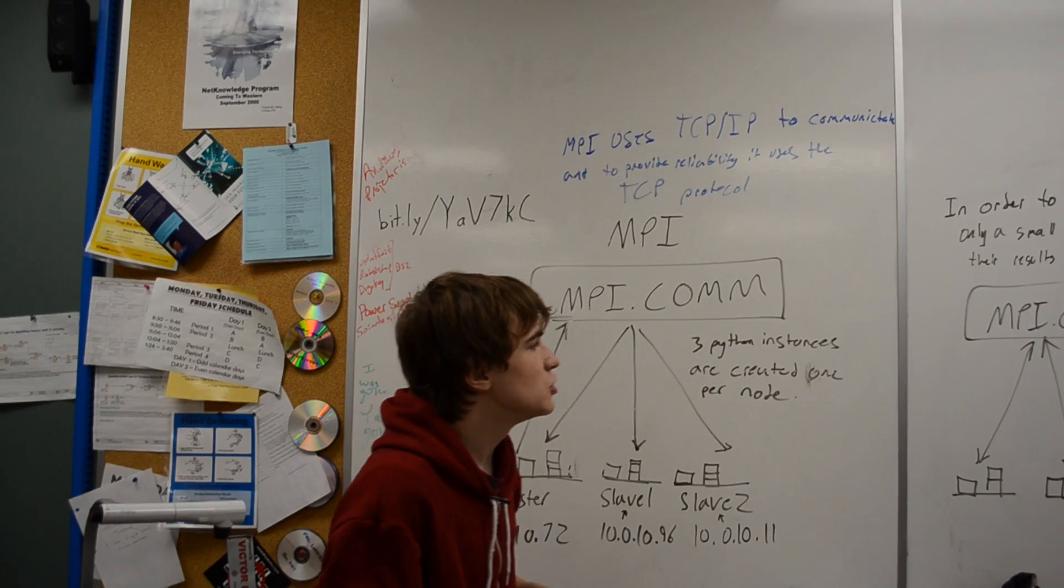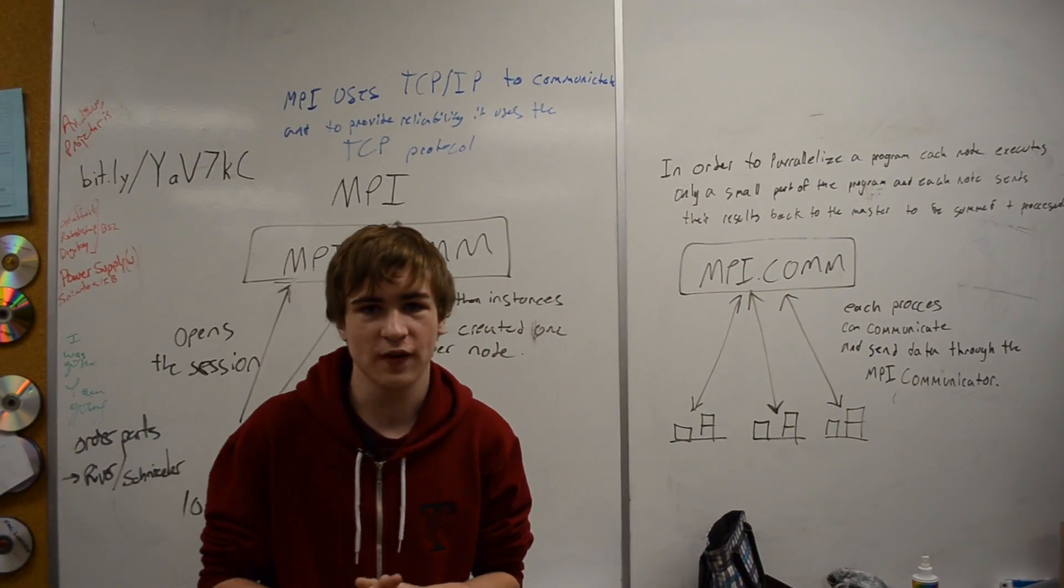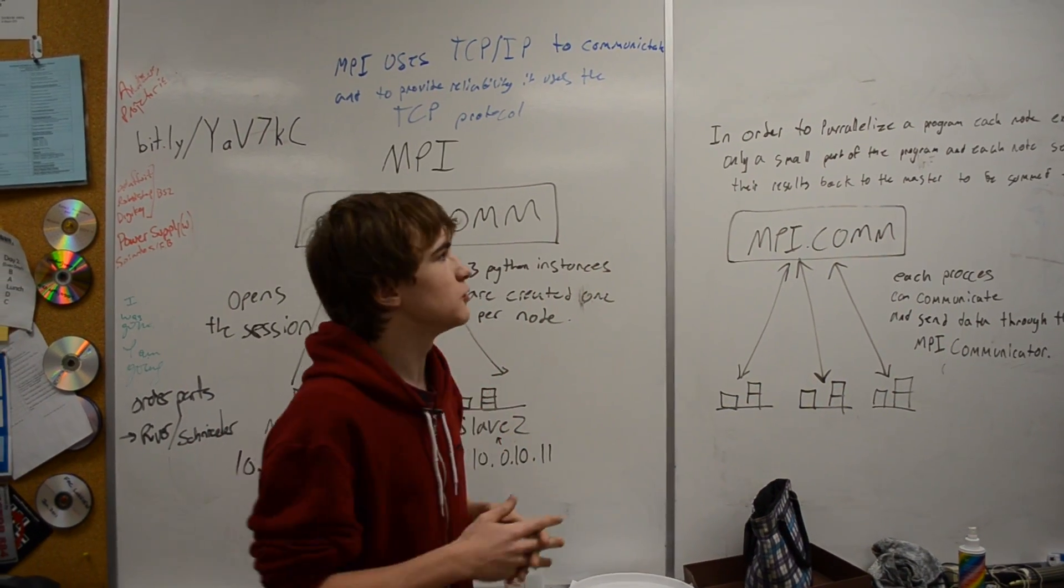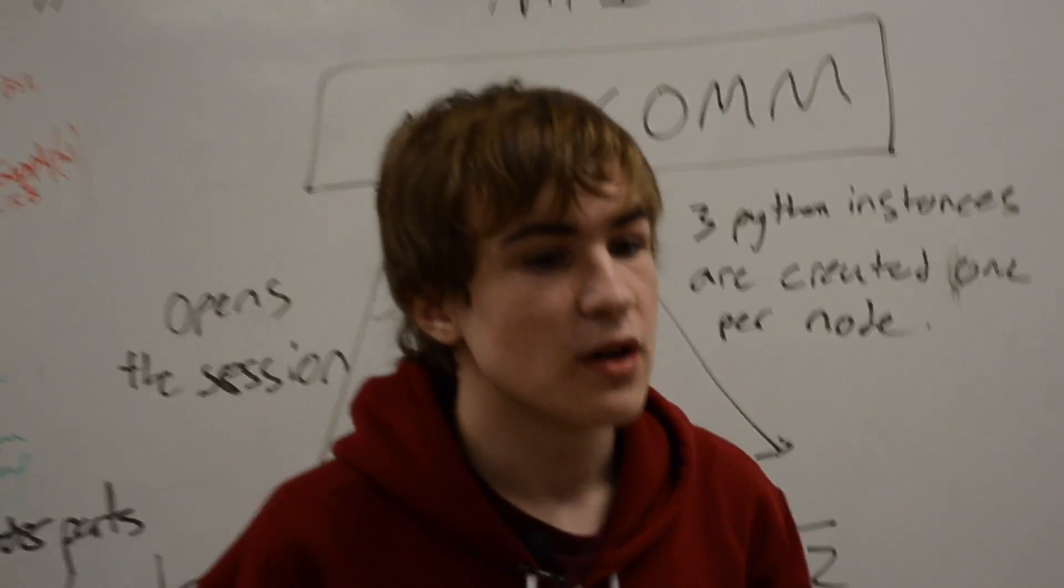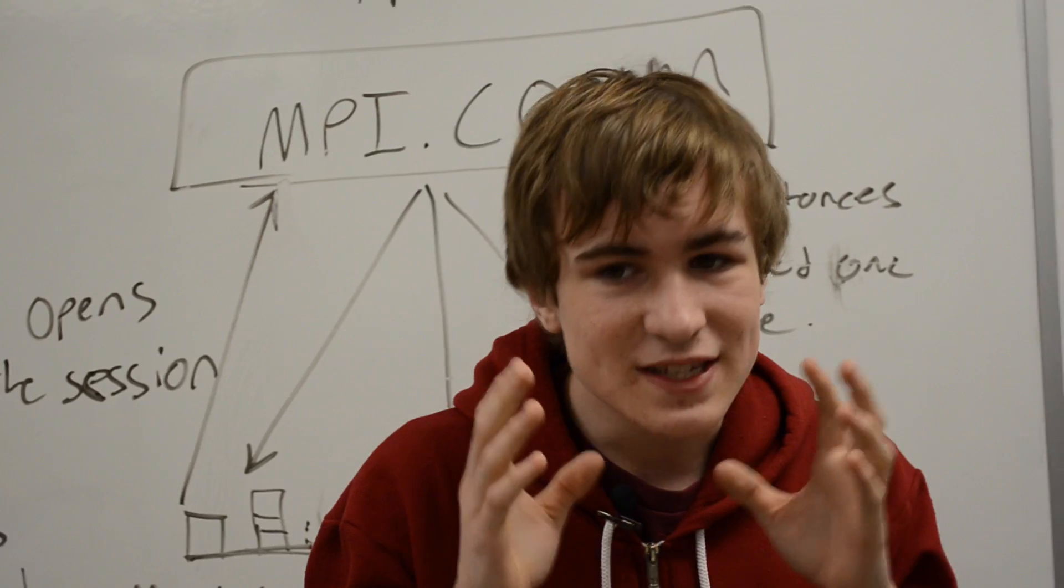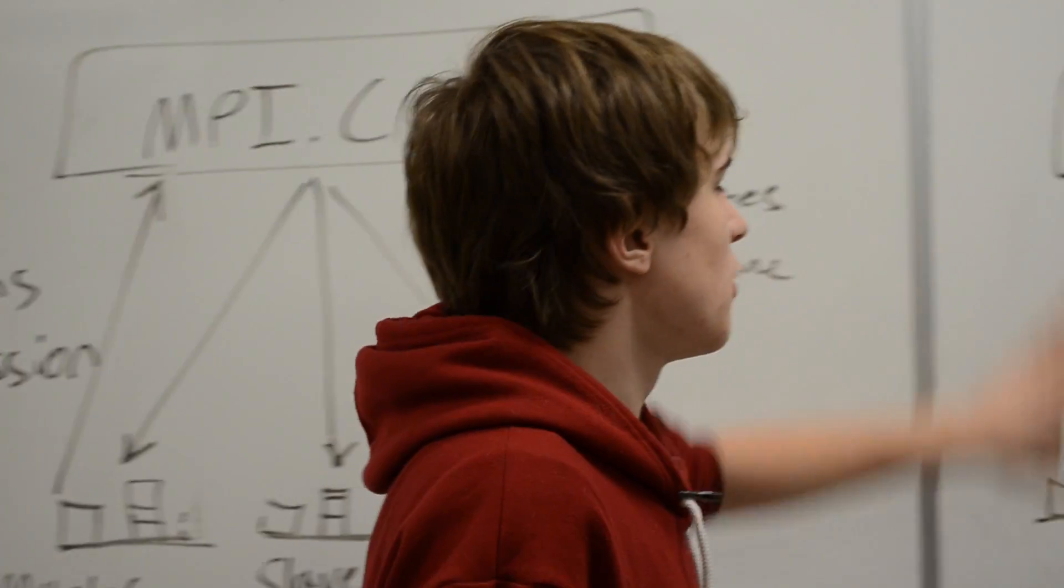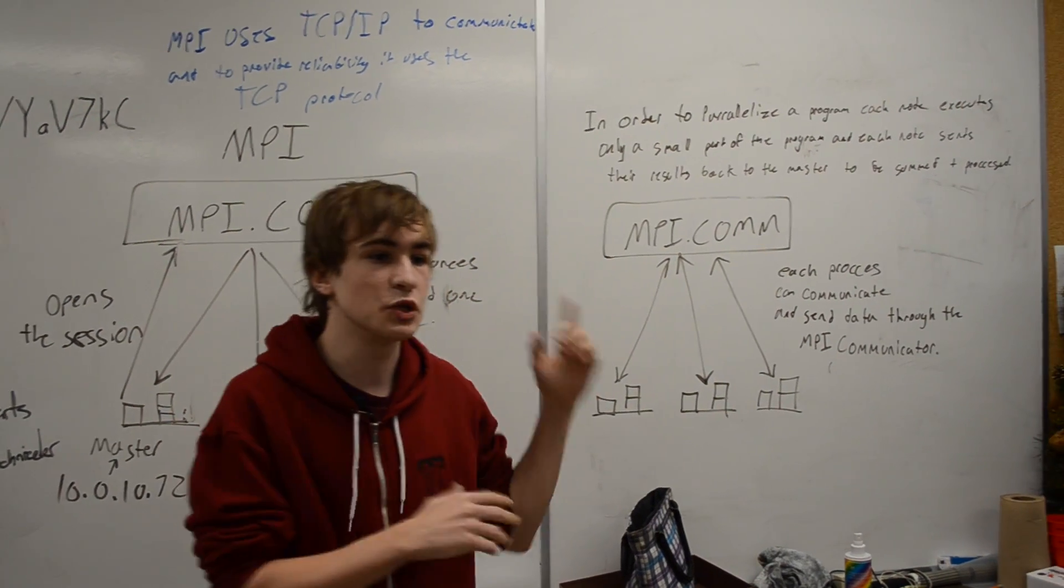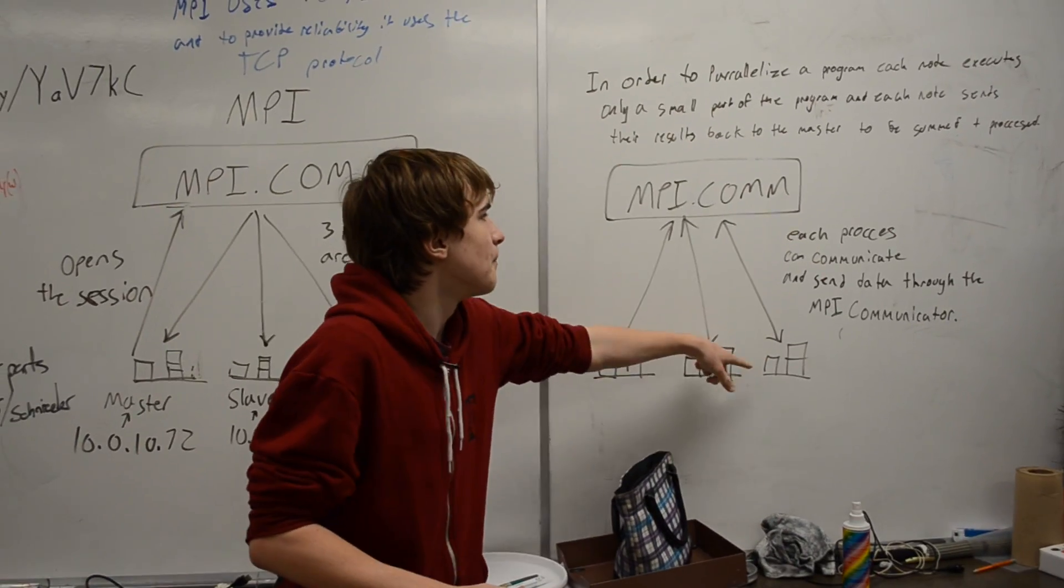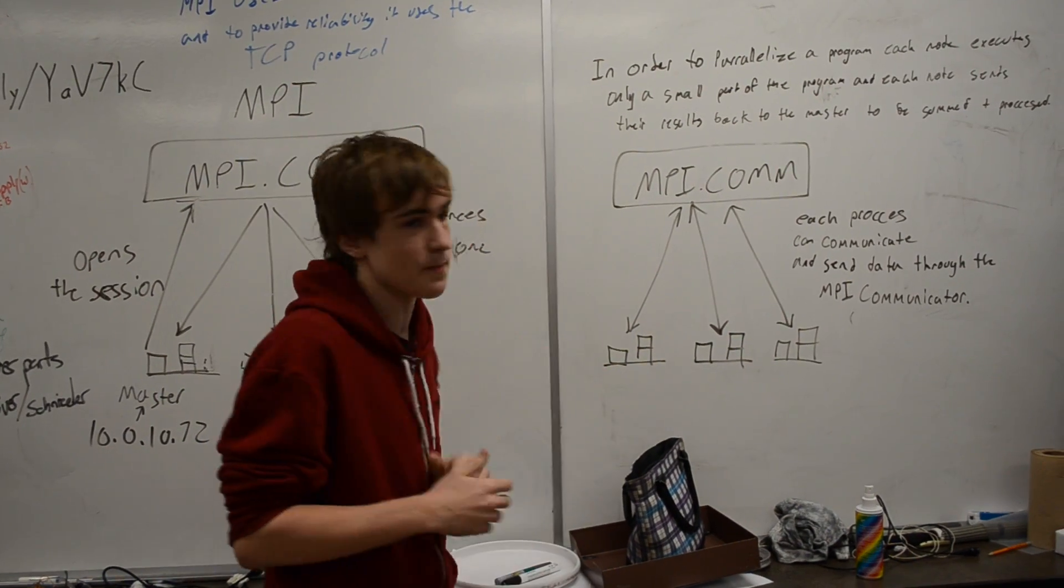Once it's done that, you move into the more complicated part of MPI, where what you do is you instruct each process, each processor, to only execute a certain set number of lines of code. And then what they'll do is they'll send variables and data between each computer back to the communicator and then to the master node.